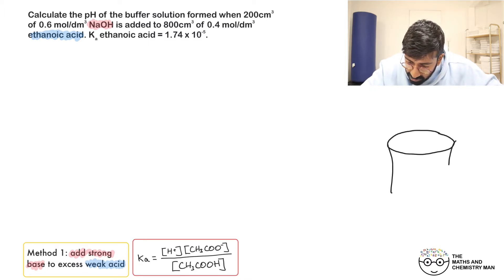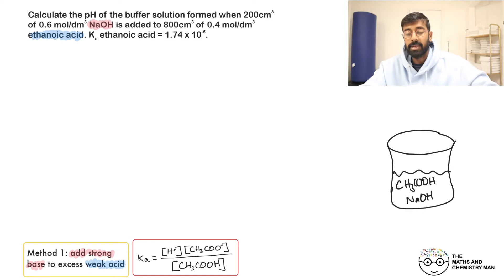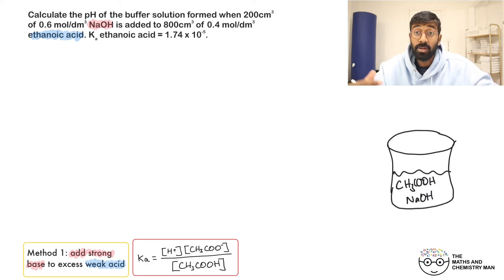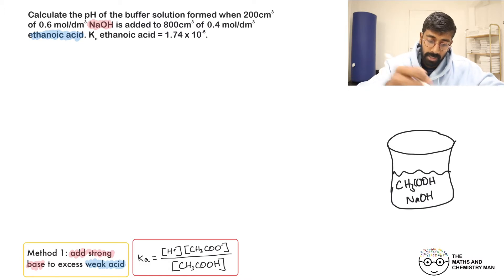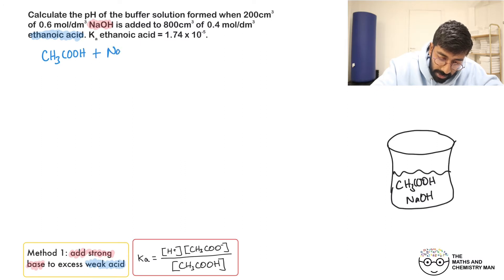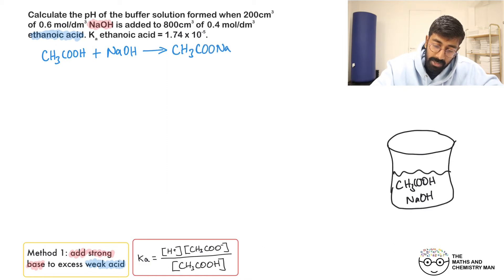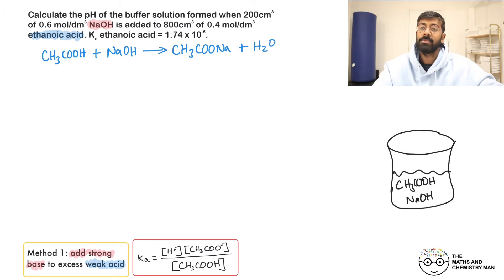In method one you're mixing ethanoic acid (CH₃COOH) with NaOH in a beaker. Because you have an acid and a base reacting, there will be neutralization. Writing out the reaction: CH₃COOH + NaOH → sodium ethanoate (CH₃COONa) + H₂O. That's the reaction taking place.